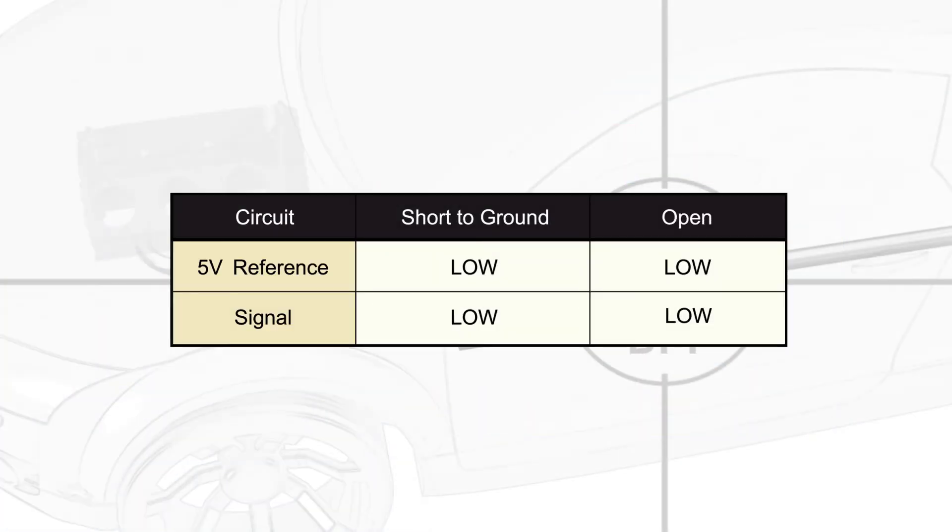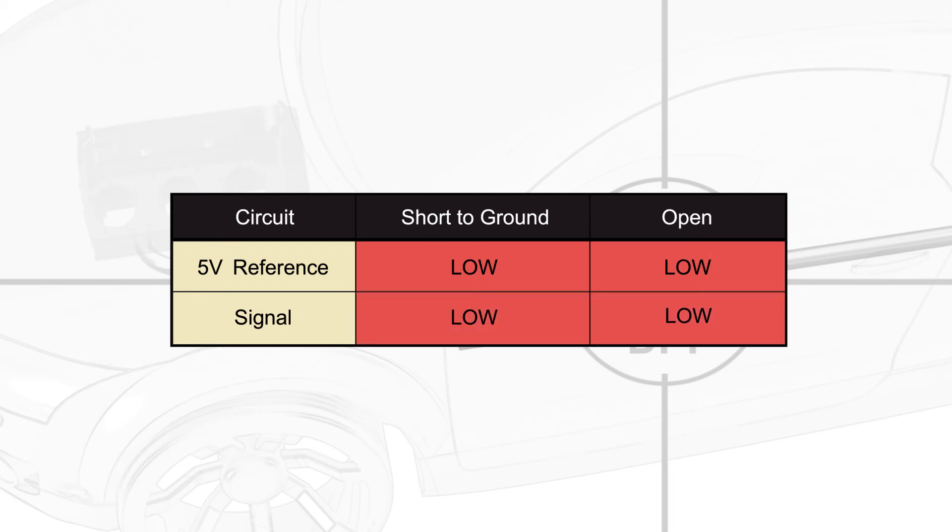A DPF pressure sensor signal voltage low fault code in a pull down monitored circuit may be caused by a short to ground or open in the high reference or signal circuit.